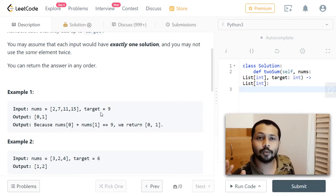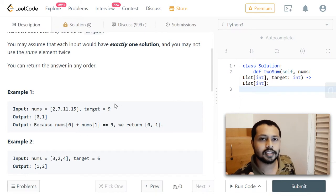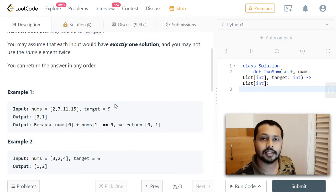We can use a dictionary to store this information. The key will be the element value we are currently looking at, and the value will be the index of that element. When we store this at every iteration, we can look it up in O(1) time because dictionaries are super fast — we can access values in constant time.